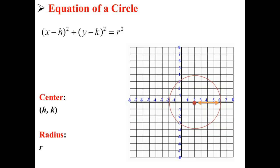Now, the equation of a circle is written in the format (x - h)² + (y - k)² = r², where the center is point (h, k) and the radius is r.